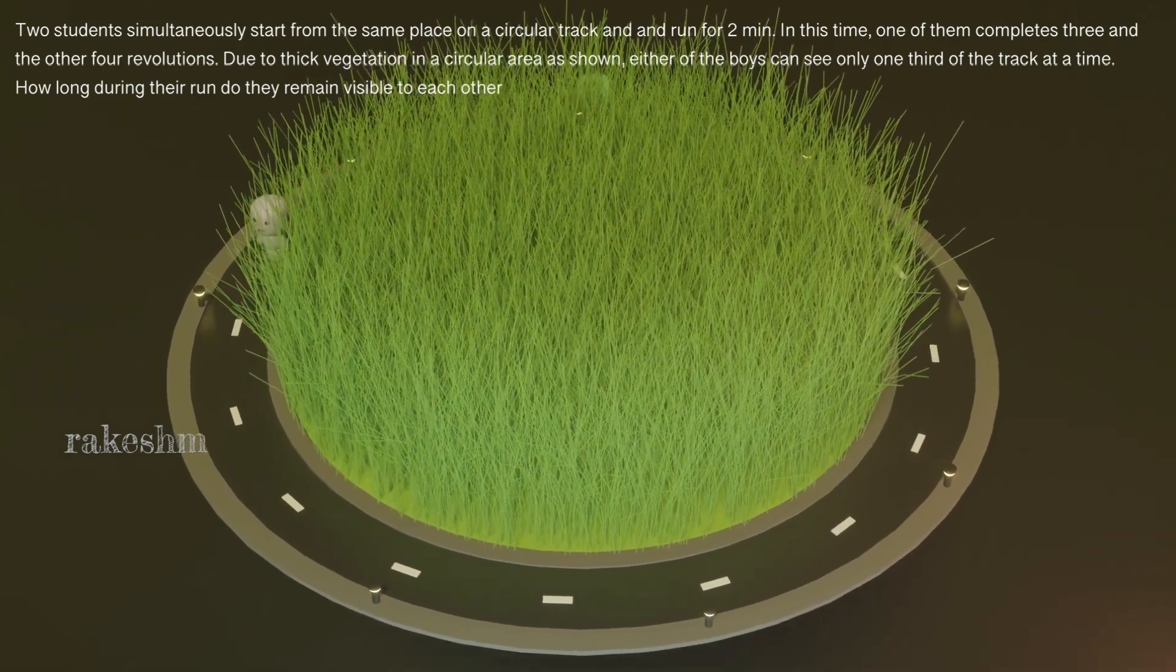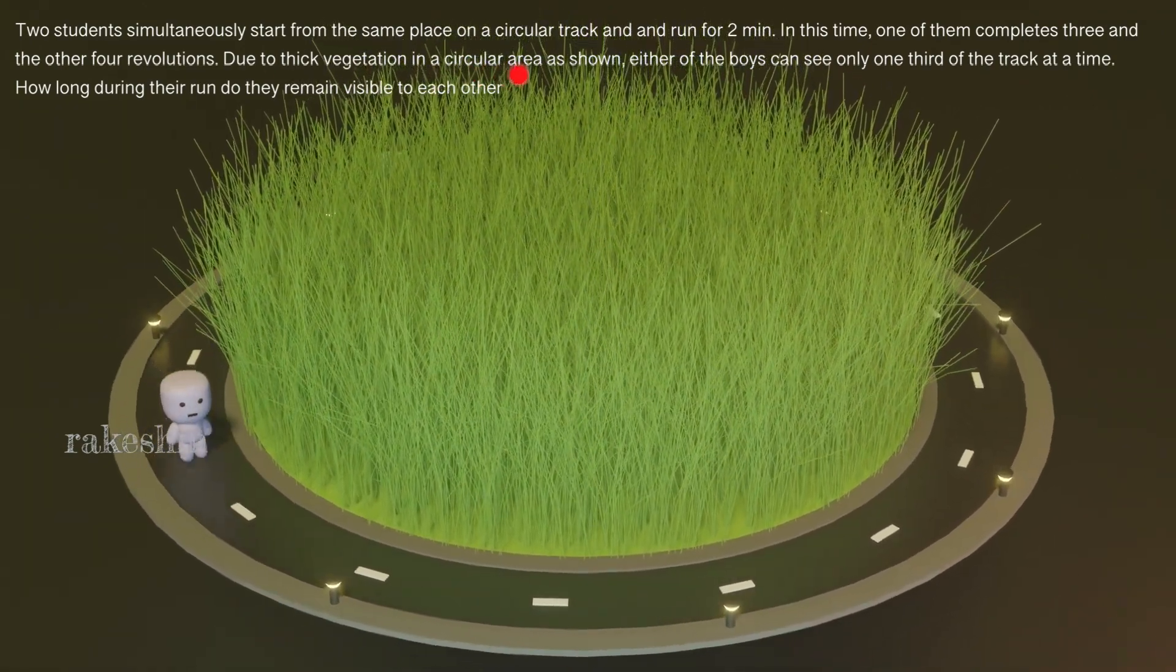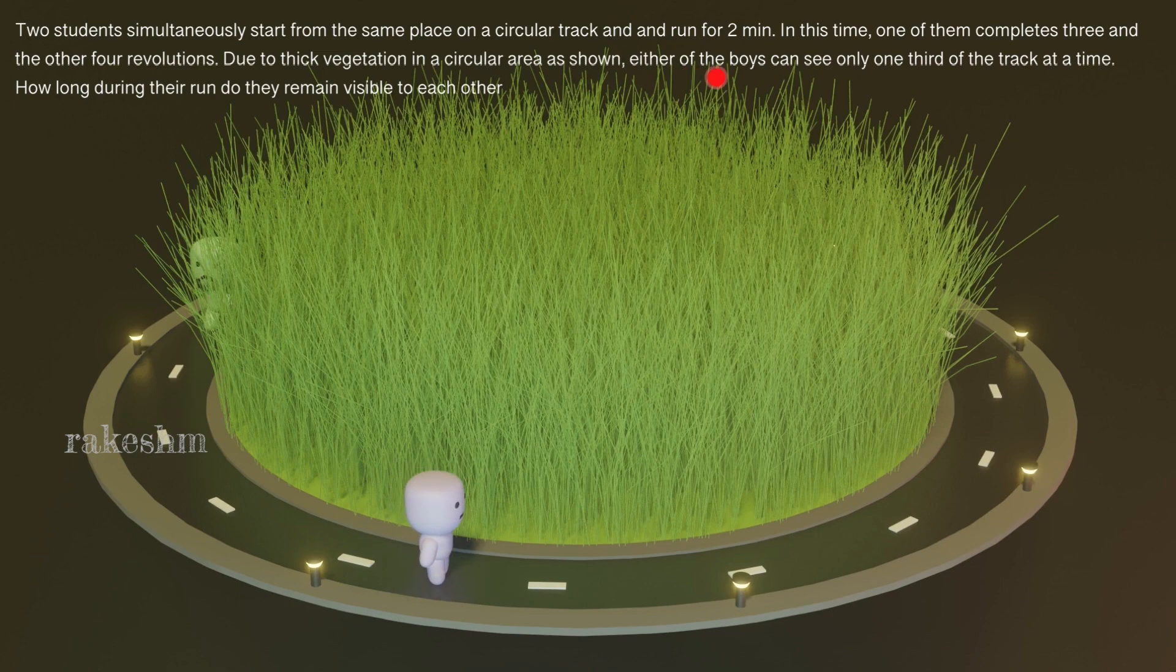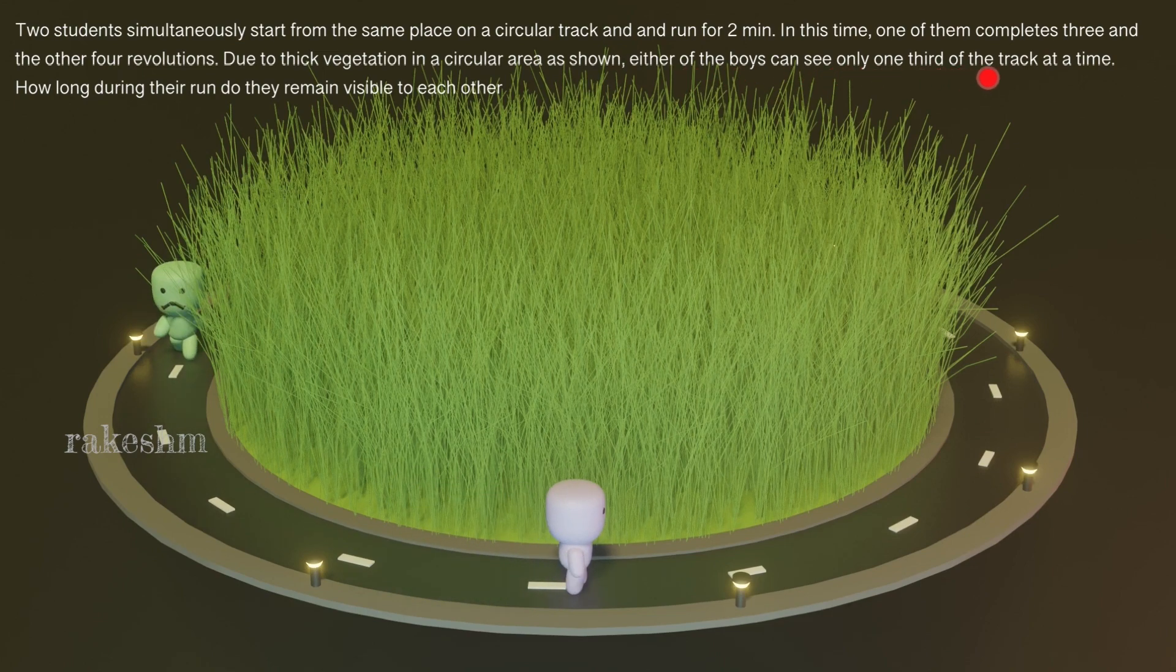Due to the thick vegetation in the circular area as shown, either of the boys can see only one third of the track at a time. So each of them can see only one third of the track at a time due to this thick vegetation. How long during their run do they remain visible to each other? So during this whole 120 seconds, how long do they remain visible to each other is the question.